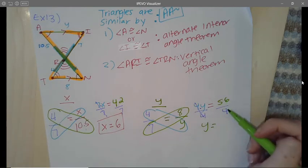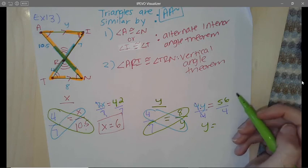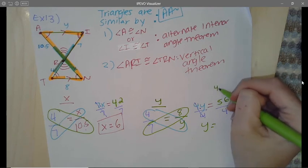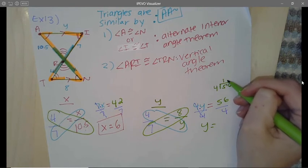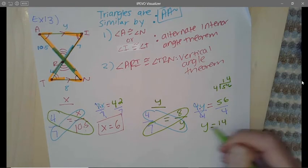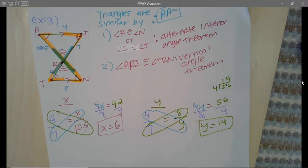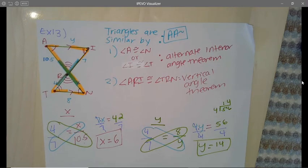4 divided by 4 cancels and turns to 1, which tells me that Y will equal 56 over 4. I'm going to work it out—4 goes into 5 once, 14. So Y would be 14. Wasn't that fun? I can tell you already that Example 14 is going to be even more fun, so get excited!